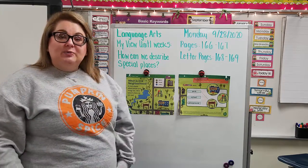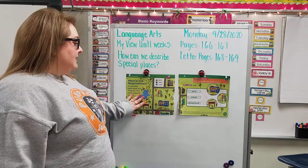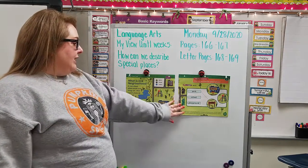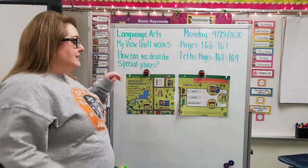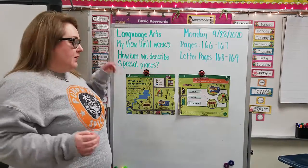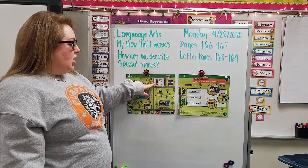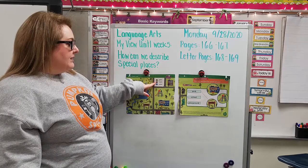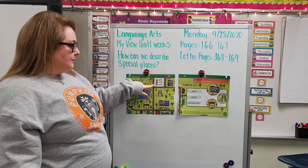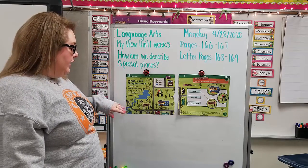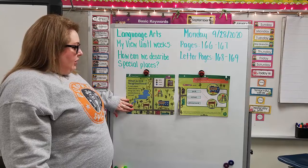A special place is your neighborhood — it's where you live. We have an example of a neighborhood here and we have a key, and a key tells you all the different parts of a map. All the green parts show grass, all the gray lines and gray spots with lines are roads, and all the blue is water.